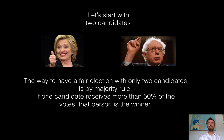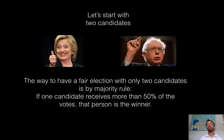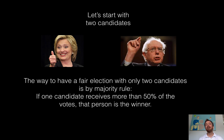If you have two candidates, the easiest way to always have a fair election — and the one thing we would most likely do — is majority rule. Whoever gets more than 50% of the votes, that person is the winner. Some of you might ask: what if they tied? It's actually happened. I remember one case where two people running for mayor tied, and they ended up flipping a coin. But the odds of that happening are pretty low. So, majority rule.